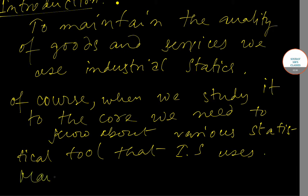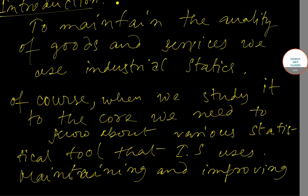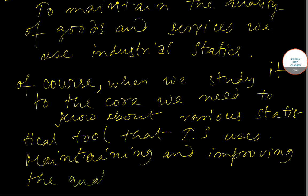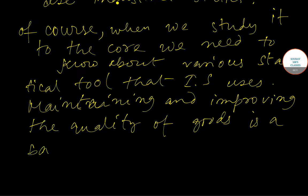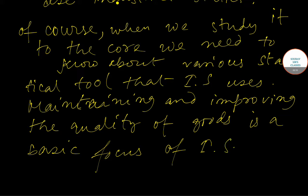Maintaining and improving the quality of goods is a basic focus of industrial statistics. We can say that industrial statistics mainly focuses on making it a point of importance that the goods we are buying are quality products and that the quality of the product needs to be continuously increased. Industrial statistics uses tools by which we can determine how to improve and maintain the quality of goods over a long time.